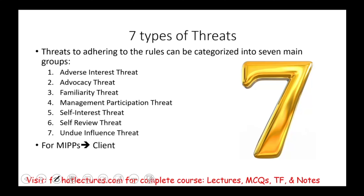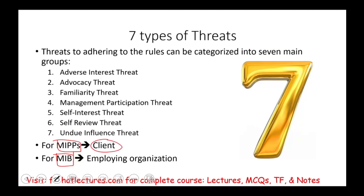In this session, we're going to be explaining those seven threats separately. However, we have to keep in mind that some of them apply more to members in public practice — CPAs — and some apply as well to members in business. When we have members in public practice, we are dealing with the client because we are auditing a client. When we are a member in business, the CPA is dealing with the employee organization. Use your common sense: does this threat apply to members in public practice, or mostly members in business?